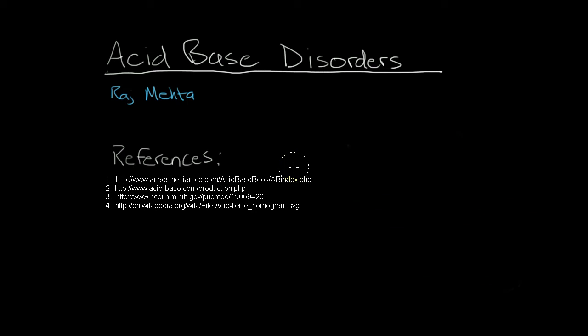Hi, this is Raj Mehta, and I'm going to be doing a brief review of acid-base disorders. The value of acid-base disorders, like any clinical symptom or sign you might see, is that you can use the information to determine the underlying disease or etiology of your patient's ongoing problems. The best way to approach acid-base disorders is to take a systematic approach. Before I show you the one that I find very helpful, I think it's worthwhile to review some basics on acid-base homeostasis in the human body.